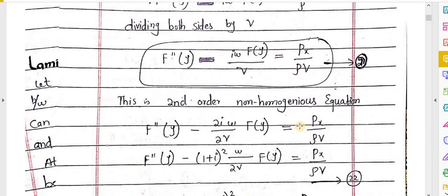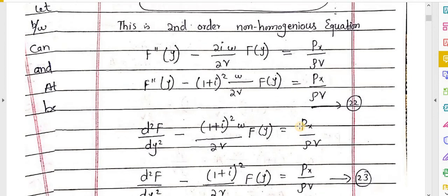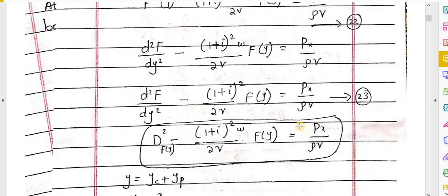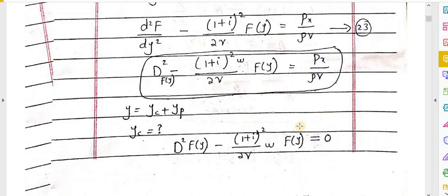Using these values in equation 12, we finally get equation 21, which is a second-order homogeneous equation. This can be rewritten as equation 22 and equation 23 in factored form. We know that the general solution y equals yc plus yp, where yc is the complementary function and yp is the particular integral.